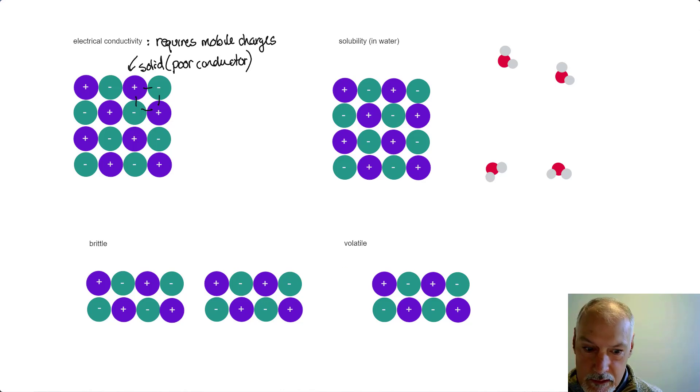However, if we melt our material, the charges become free. The ions are free to move around, and we get a much better conductor. In the liquid state, the ions are free to move, and as a result, we get a good conductor.